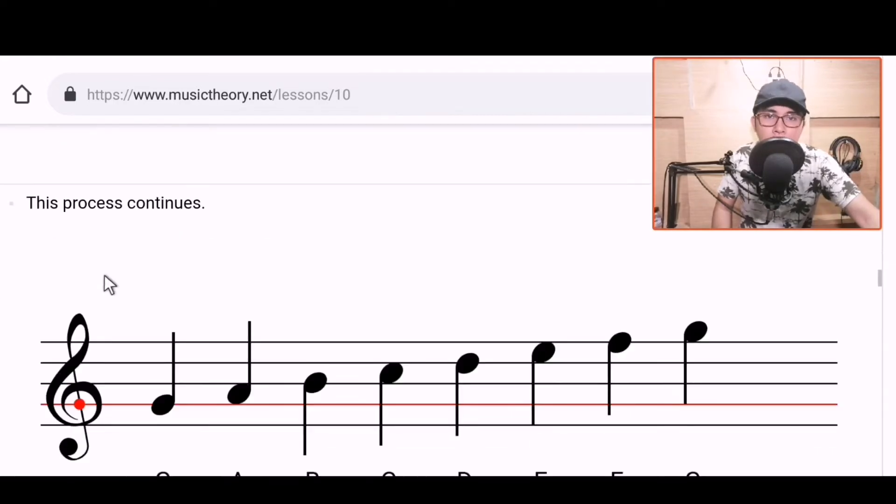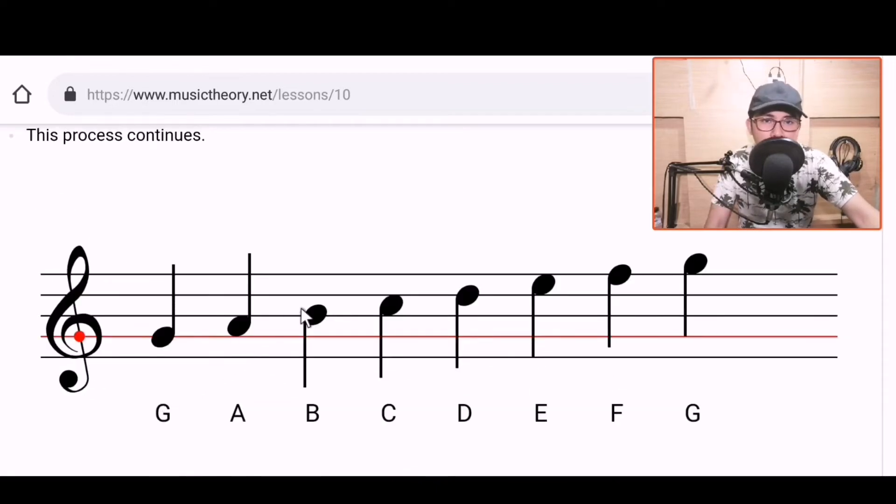And this process continues. So we have G, A, B, C, D, E, F, G. If we translate this to piano, this is how it sounds. It's not a major scale guys, this is a Mixolydian scale. So it's not based on major or minor scales. This is different. So basic: G, A, B, C, D, E, F, G. Okay.